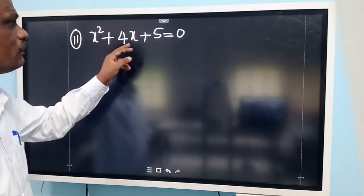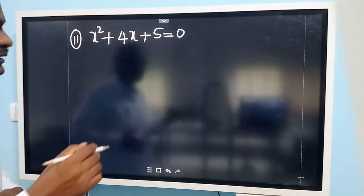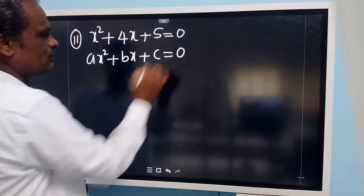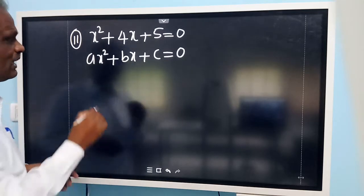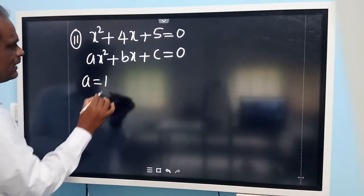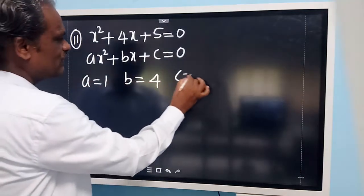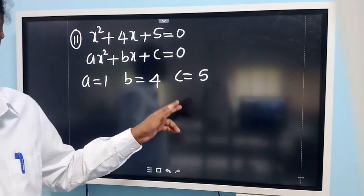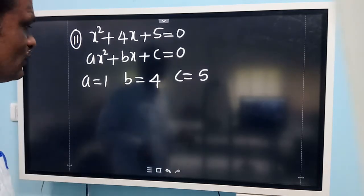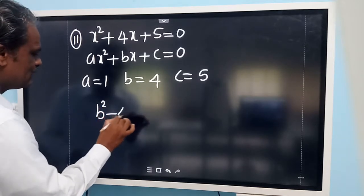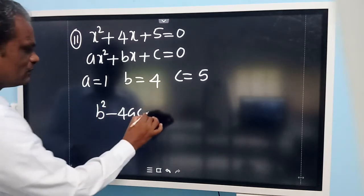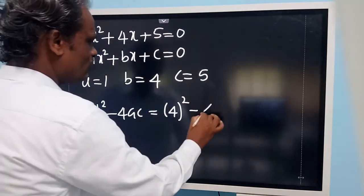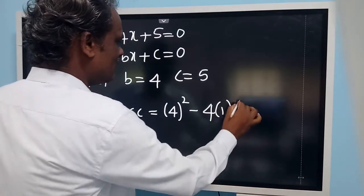Now look at this question: x squared plus 4x plus 5 equals 0. Let us compare with the standard equation ax squared plus bx plus c equals 0. Comparing, a value is equal to 1, b value is equal to 4, and c value is equal to 5.